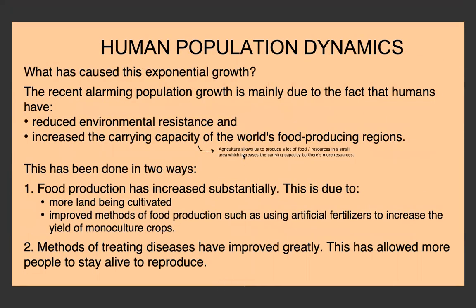So what has caused this exponential growth? The recent alarming population growth is mainly due to the fact that humans have reduced environmental resistance. In a previous video on population studies, we spoke about environmental resistance as the factors that regulate the population and keep it from increasing too far over the carrying capacity. Humans have also increased the actual carrying capacity of the world's food-producing regions, because through agriculture we've been able to produce more food and resources in a smaller area.